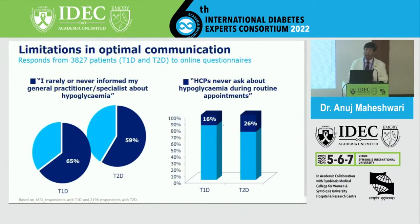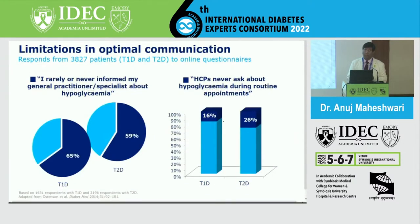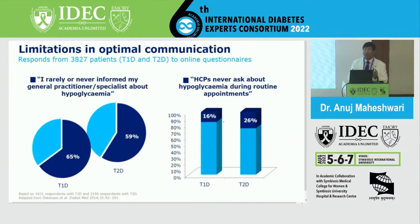Another important issue regarding under-reporting of hypoglycemia is clinician inertia. Many clinicians remain reluctant about hypoglycemia - they do not ask patients about it, and patients are not informed about the signs and symptoms. Many clinicians avoid discussing hypoglycemia because they fear patients may stop taking their medication upon hearing about it. This fear creates difficulty in optimal management and data recording of hypoglycemia.